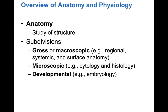Welcome to A&P 1. This is chapter one, which is an overview of anatomy and physiology. We'll look at the 11 systems in this chapter as a quick overview, a catch-all to introduce you to the course, and then we'll define some terms.